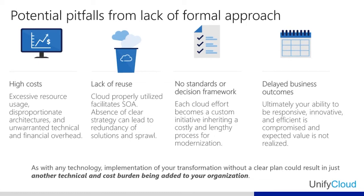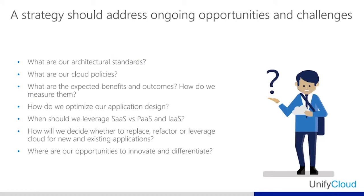Having a formal approach, formal strategy, or formal best practices will also help with other things. For example, it will help you in defining your architecture standards and building cloud policies — such as how you control cost, how you have disaster recovery in place, what happens if the cloud connection breaks, where backup is stored, and which country you're going to store your data in. It will also help you align with the business outcomes.